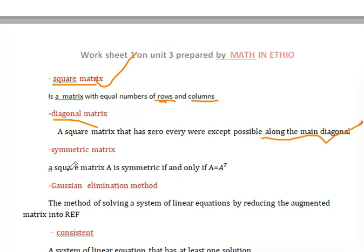Symmetric matrix: A square matrix A is symmetric if and only if A is equal to A transpose. When A minus A transpose equals zero matrix of the same size as A.